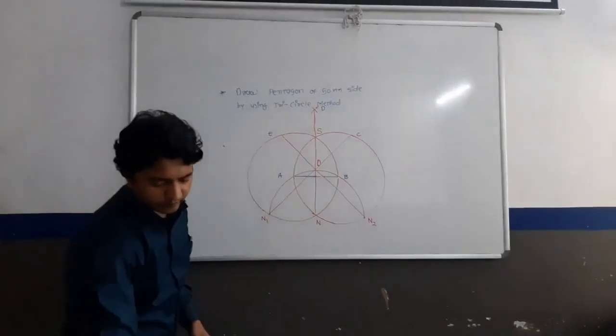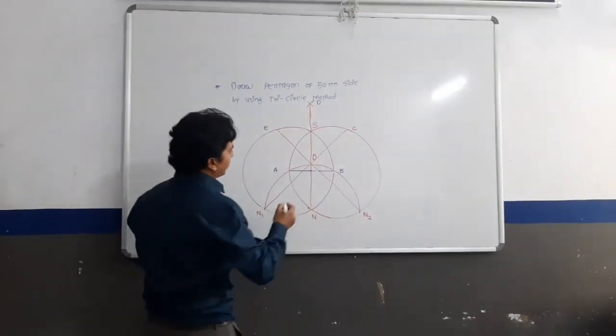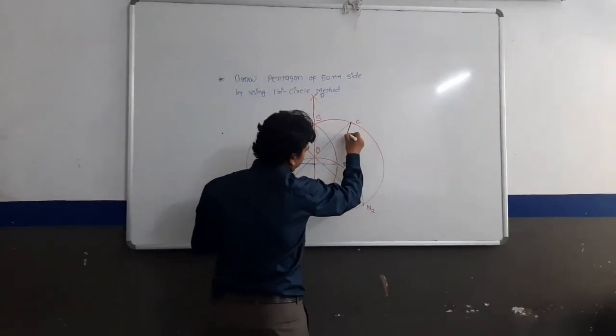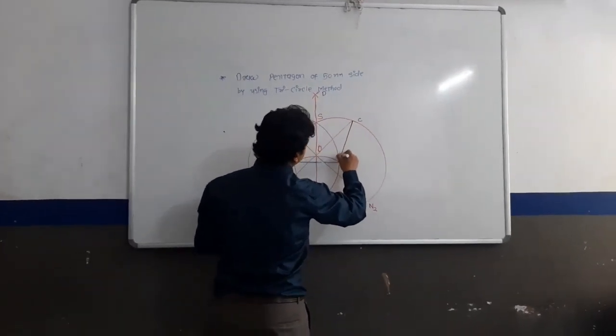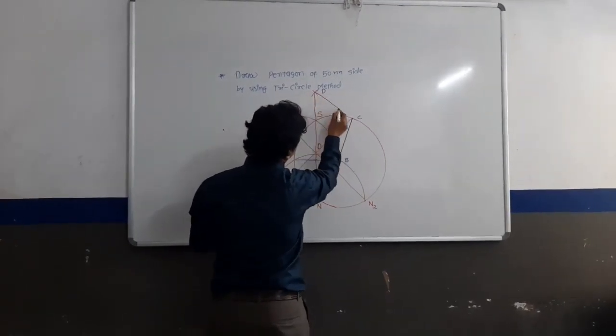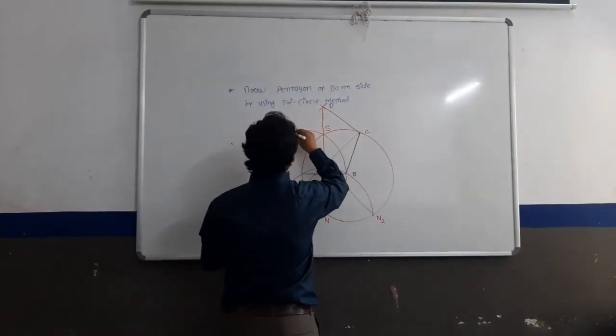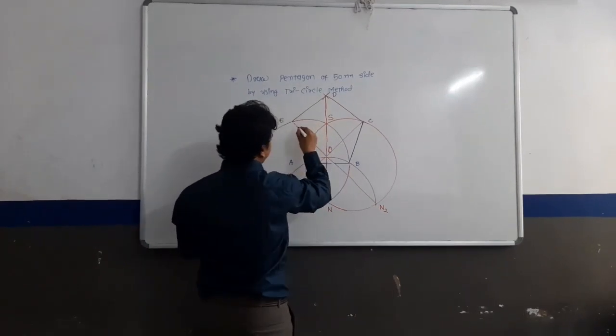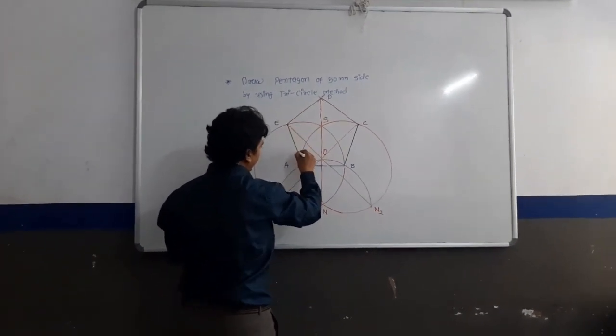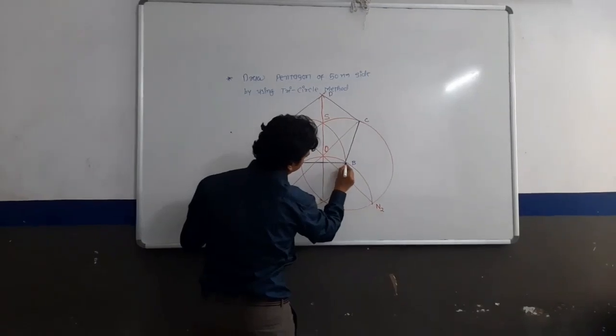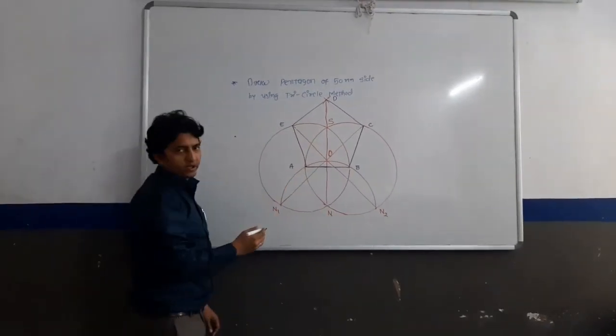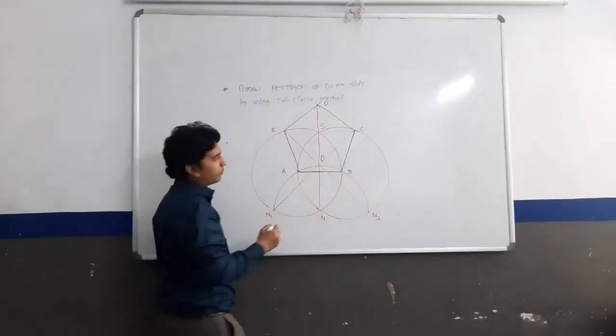At the last, all points are joined respectively: B to C, C to D, D to E, E to A, and A to B. So this is what is called pentagon by using tri-circle method.